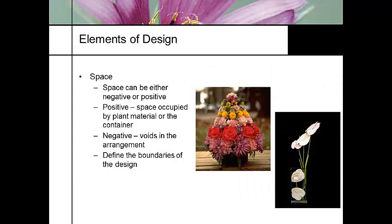How you use space can be either negative or positive. In this very tightly designed pyramid form there is no space — it's a solid form — whereas the anthuriums over here are very loose and very open. Positive space is occupied by plant material in the container; negative space refers to the voids. You can use space to define your boundaries.